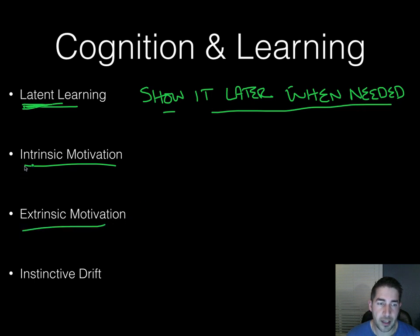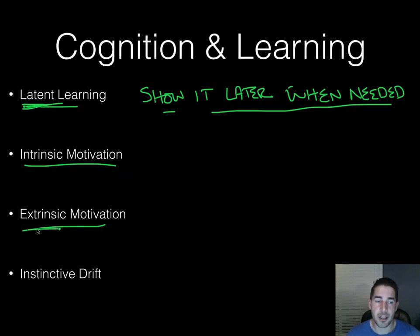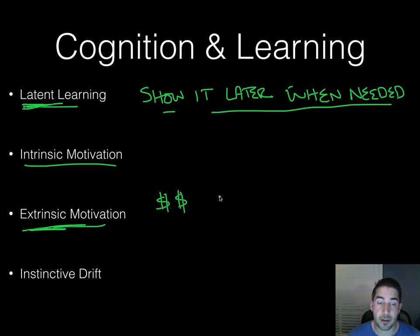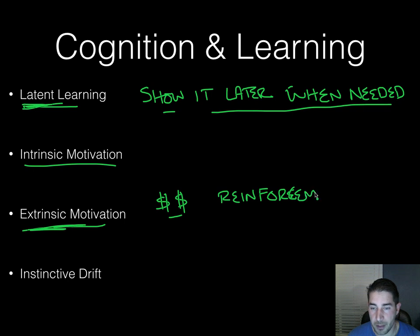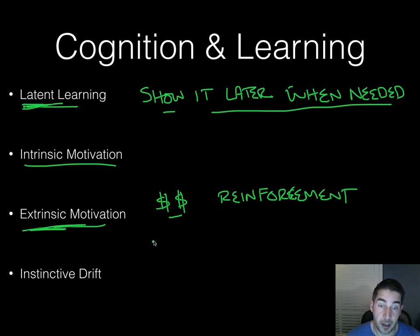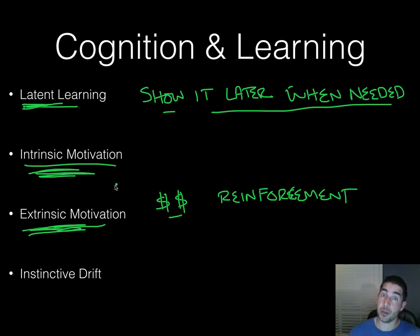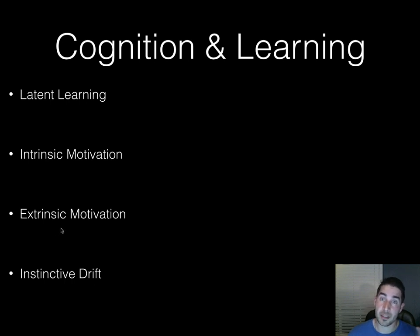There are two types of motivation. Intrinsic motivation is when you're motivated to do something because it's inherently pleasing — you just enjoy doing it. Extrinsic motivation means you do it because something outside of you is rewarding or punishing you, like getting money or avoiding a bad grade. For example, studying because you enjoy the subject is intrinsic; studying because you'll get a bad grade if you don't is extrinsic motivation.